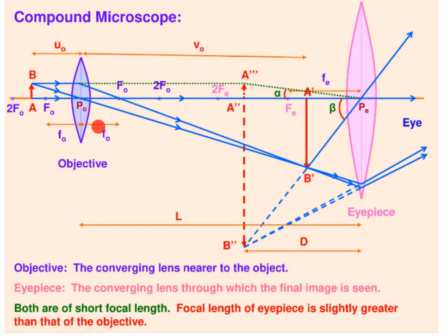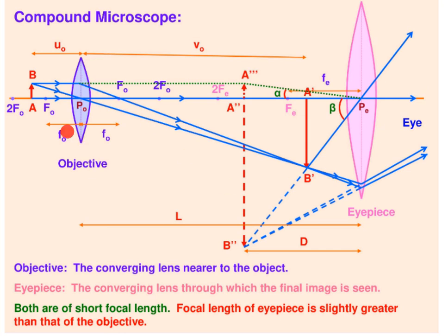Consider that this is the first lens and this is your second lens. The first lens is called the objective lens — it will be nearer to the object. And the second lens is called the eyepiece — this lens is nearer to the eye. The objective is the converging lens nearer to the object, and the eyepiece is the converging lens through which the final image is seen. Both are of short focal length.